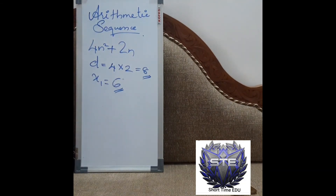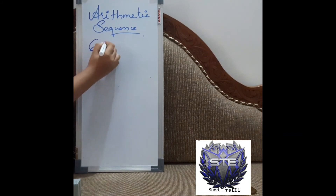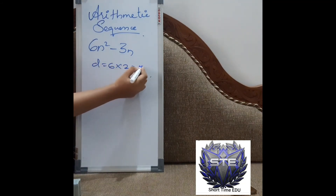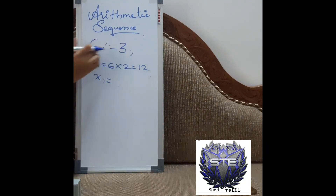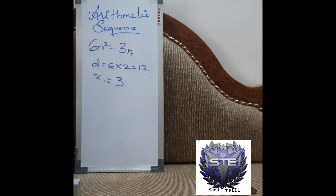Now let us try another expression: 6n squared minus 3n. For this term, the coefficient of n squared is 6, so d equals 6 times 2, which is 12. For x1, substitute n=1: 6 minus 3 equals 3. So x1 is 3 and d is 12 for this expression.